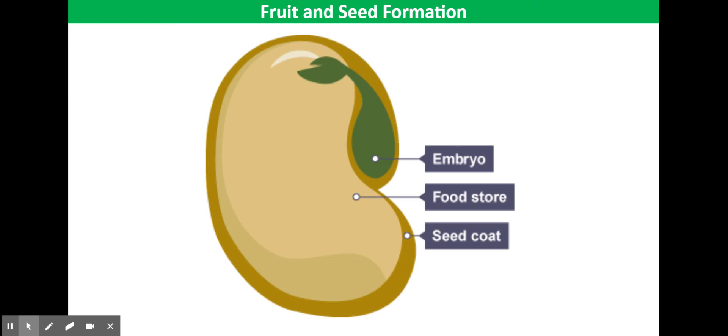The embryo is the young root and shoot that will become the adult plant. It contains the earliest forms of the plant's roots, leaves, and stems and is capable of sensing when the conditions are correct for growth to take place.